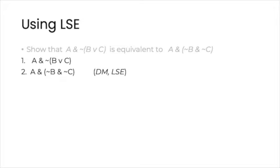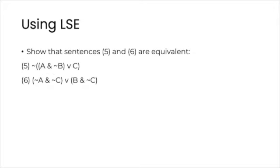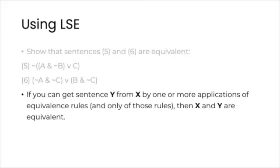Here's another example of a problem. Show that sentences 5 and 6 are equivalent. We saw that one way of showing that two sentences are equivalent is by means of a truth table. However, there is another route, which is often shorter. The route is this. If you can get sentence y from x by one or more applications of equivalence rules, and only of those rules, then x and y are equivalent.